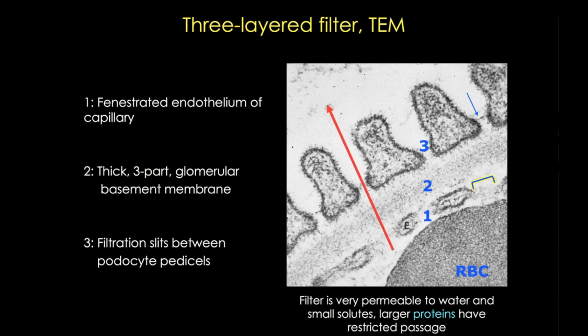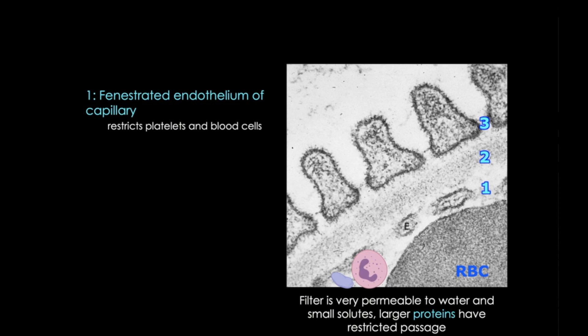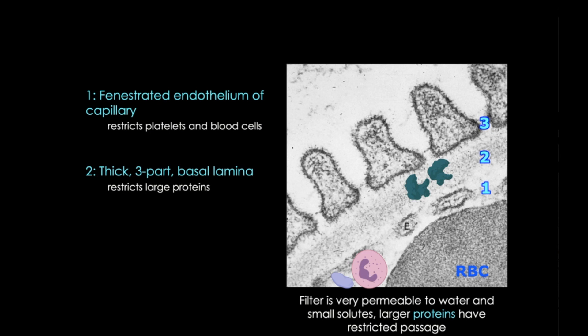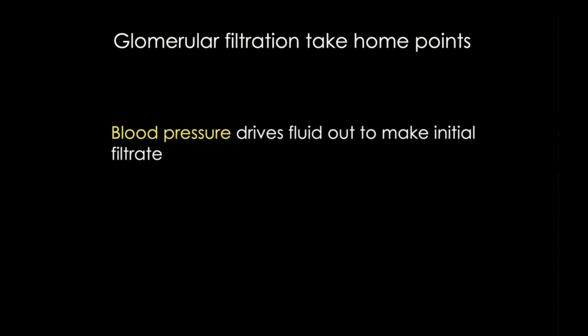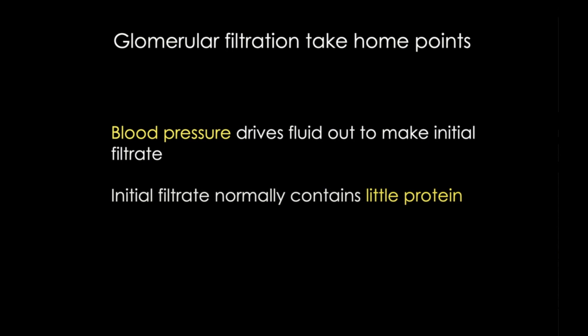The first layer restricts leukocytes and platelets from crossing. The glomerular basement membrane restricts larger proteins from getting through. And the slit diaphragms restrict other proteins and organic ions. What does get through includes water, glucose, amino acids, ions, hormones, and very small amounts of protein. Two important take-home points: the initial drive to make the filtrate is blood pressure, so changes in blood pressure will change the filtration rate; and normally very little protein gets through this filter into the urine, so protein in the urine can be a sign that there's a problem with glomerular filtration.